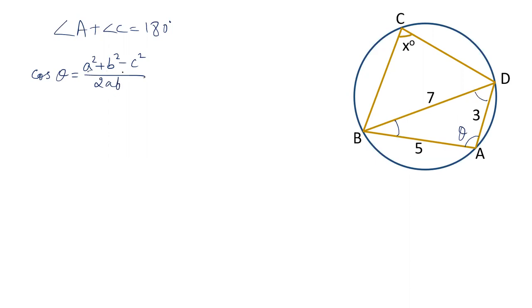Now, what are the values of A, B, and C? A and B are the sides which make the angle theta, so A and B are 5 and 3. The side opposite to the angle is C, so that side is 7. Let's put the values in: A is 5, B is 3, and C is 7, giving us 5² + 3² − 7², divided by 2 × 5 × 3.